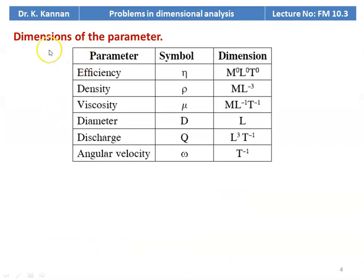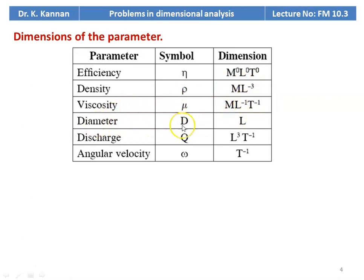The dimensions of various parameters involved: efficiency eta is non-dimensional, so M⁰ L⁰ T⁰. Density rho has dimensions M L⁻³. Viscosity mu has dimensions M L⁻¹ T⁻¹. Diameter D has dimension L. Discharge Q has dimensions L³ T⁻¹. Angular velocity omega has dimension T⁻¹.